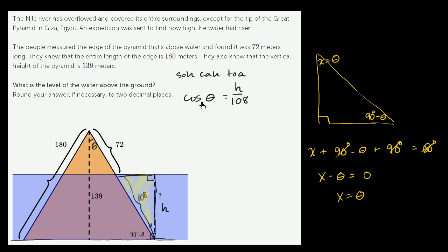That doesn't help us yet, because we don't know what the cosine of theta is. But there's a clue here. Theta is also sitting up here, so maybe if we can figure out what cosine of theta is based up here, then we can solve for h.